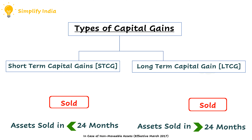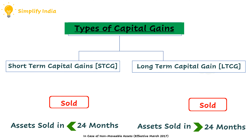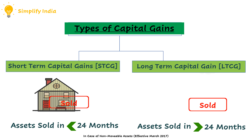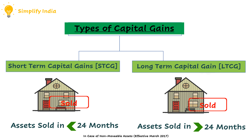Depending on the tenure of holding of a capital asset, the gains arising out of the sale of such capital assets can be broadly classified into two types: short term capital gains and long term capital gains. In case of short term capital gains, if the asset has been sold within 24 months from the period of acquisition, the gains are termed as short term capital gains. Whereas if the asset is sold after 24 months of acquisition, the gain is termed as long term capital gain.